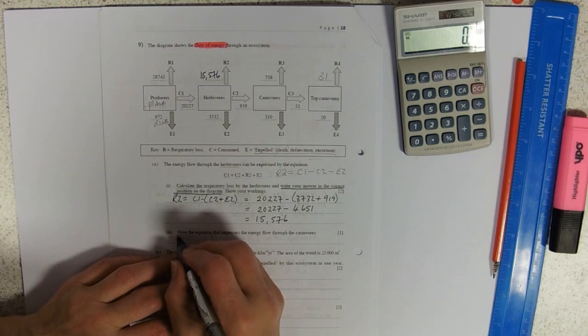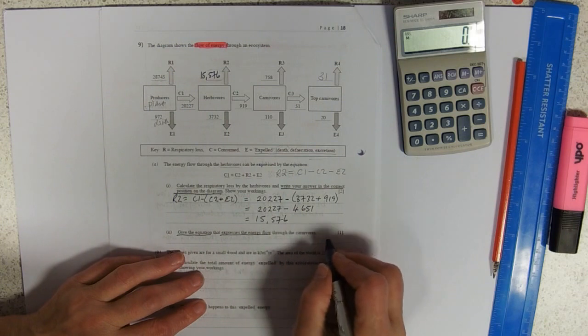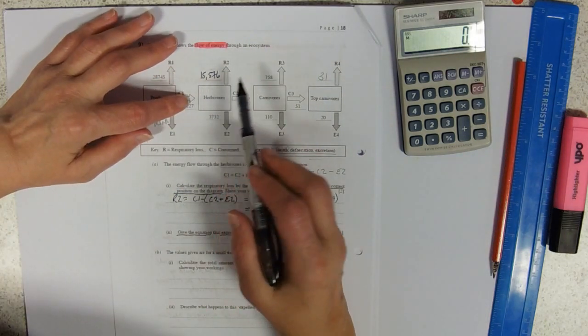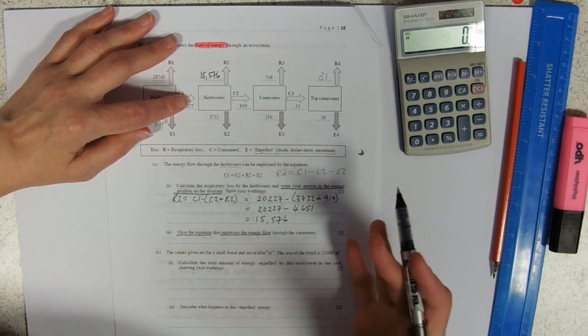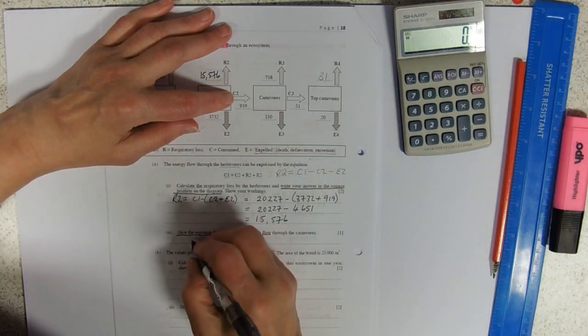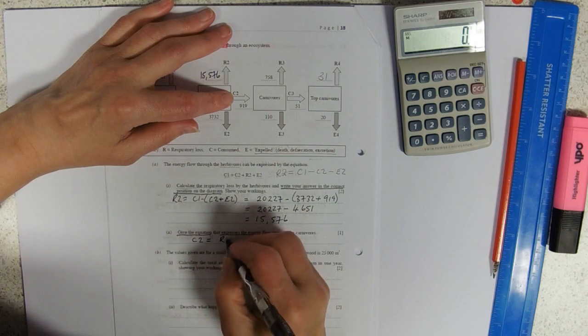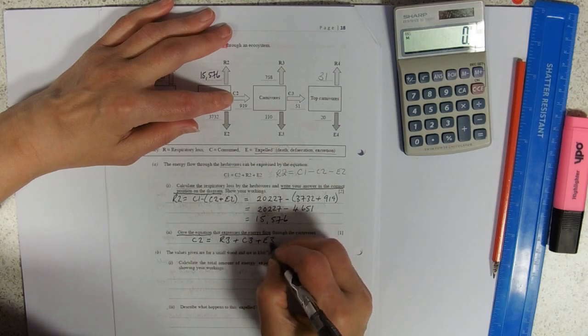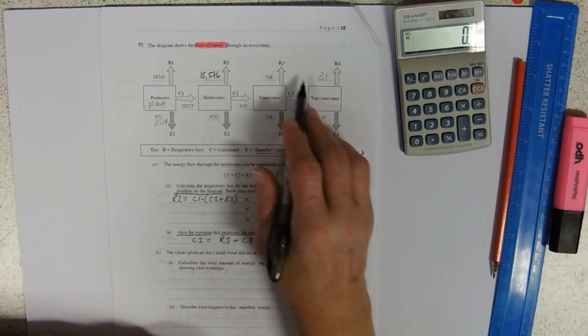Give the equation that expresses the energy flow through the carnivores. So if herbivores is C1 equals R2 plus C2 plus E2, then that must hold true for the carnivores. So C2 equals R3 plus C3 plus E3. Easy peasy. Exactly the same as that, just at the next level up. Fab.